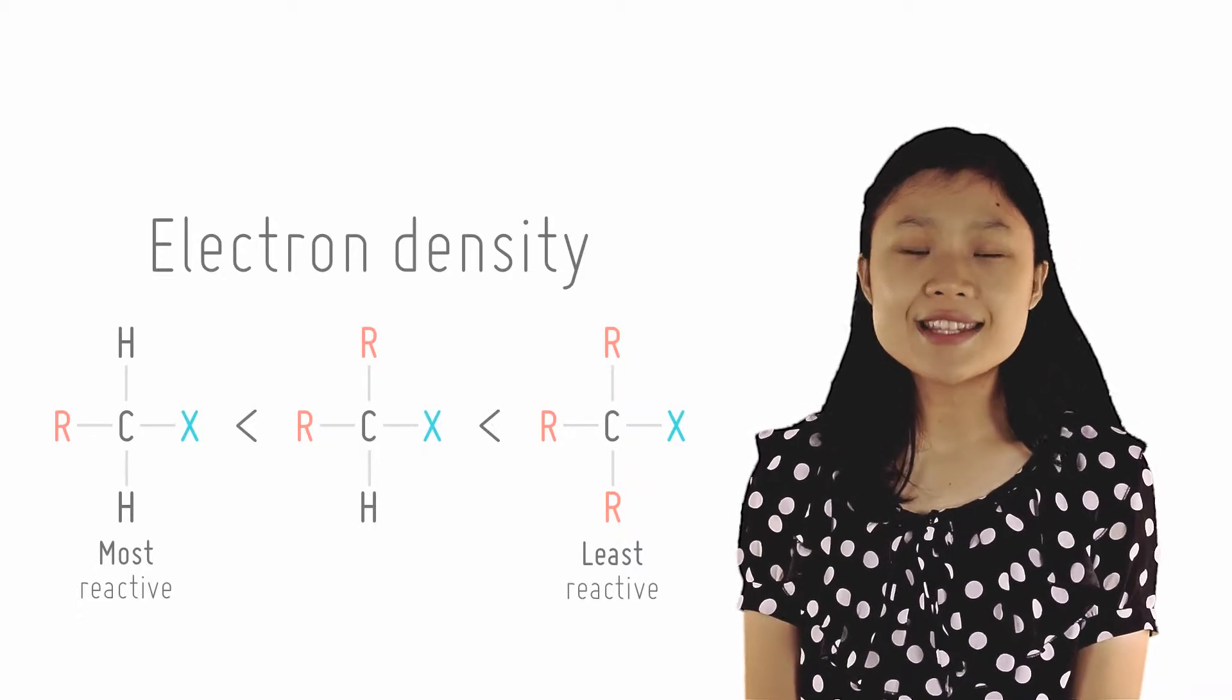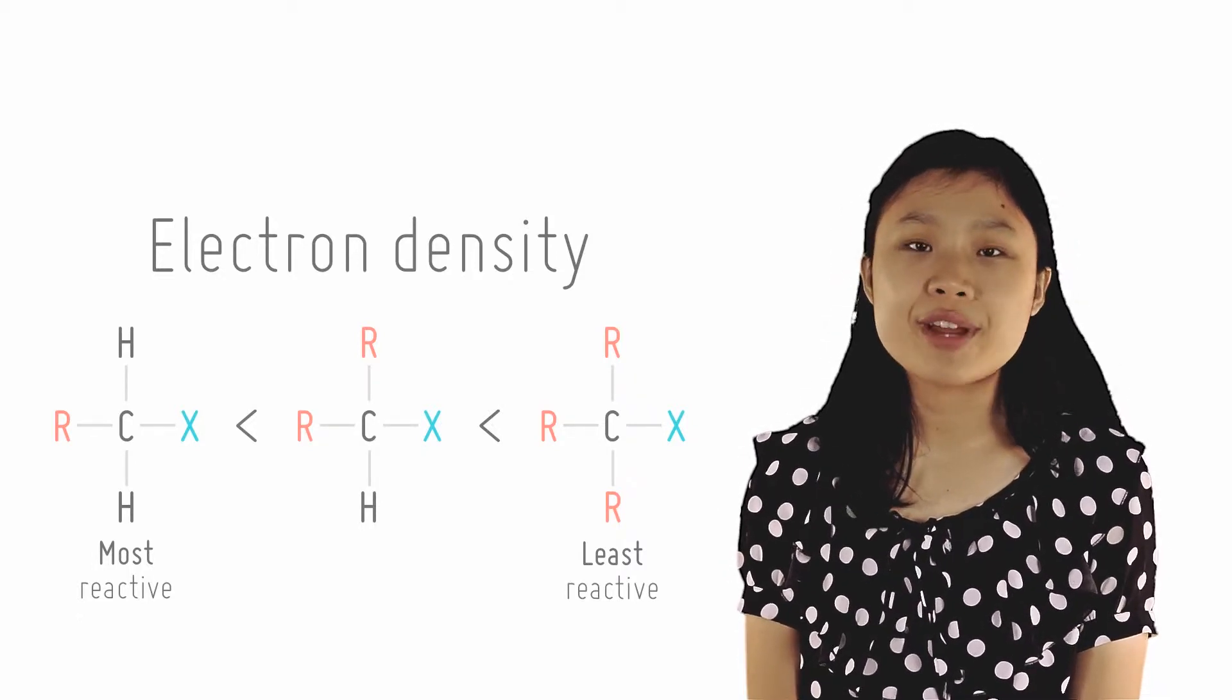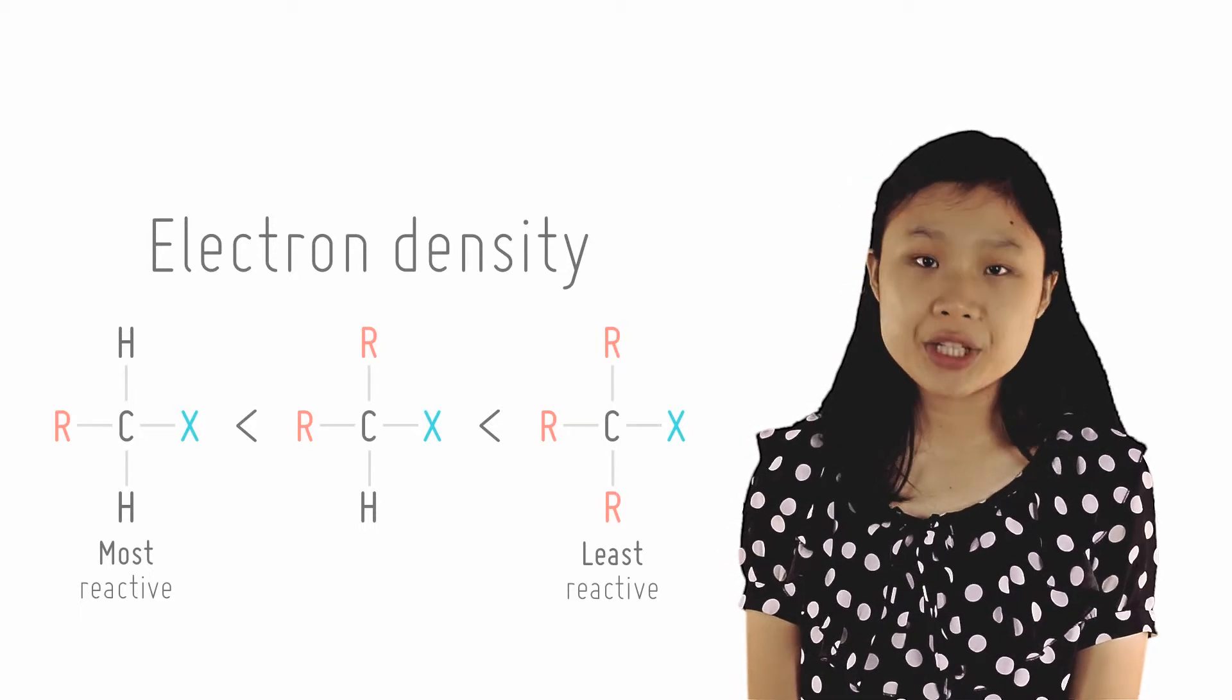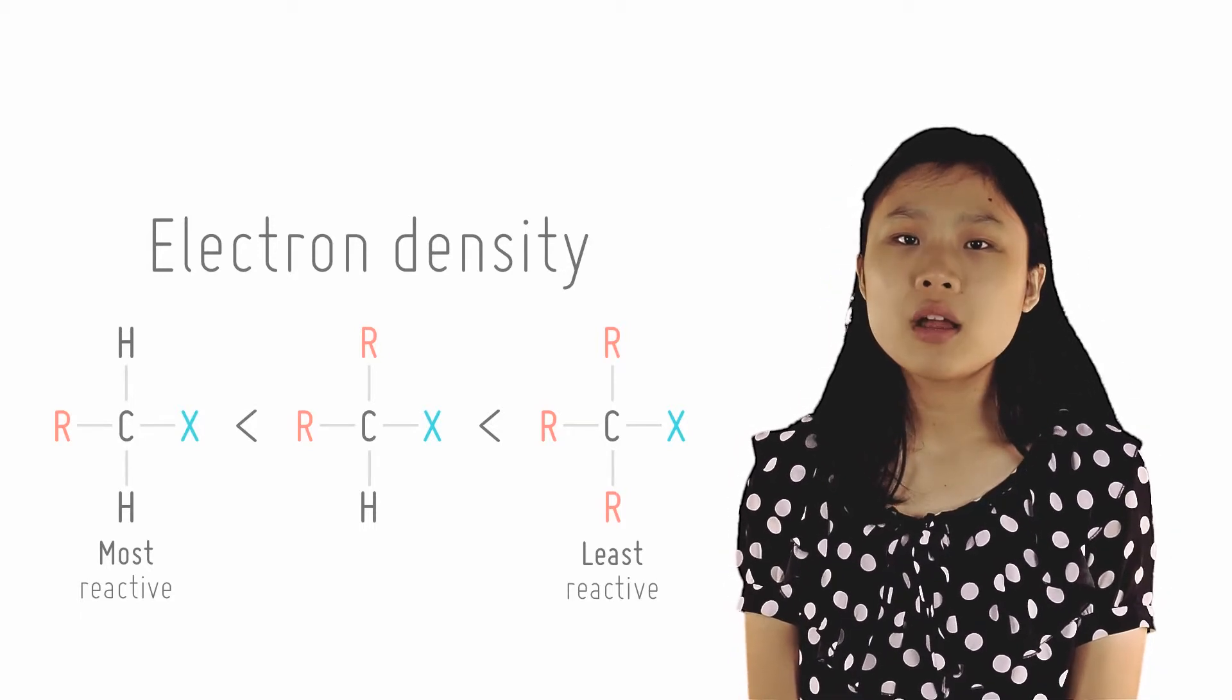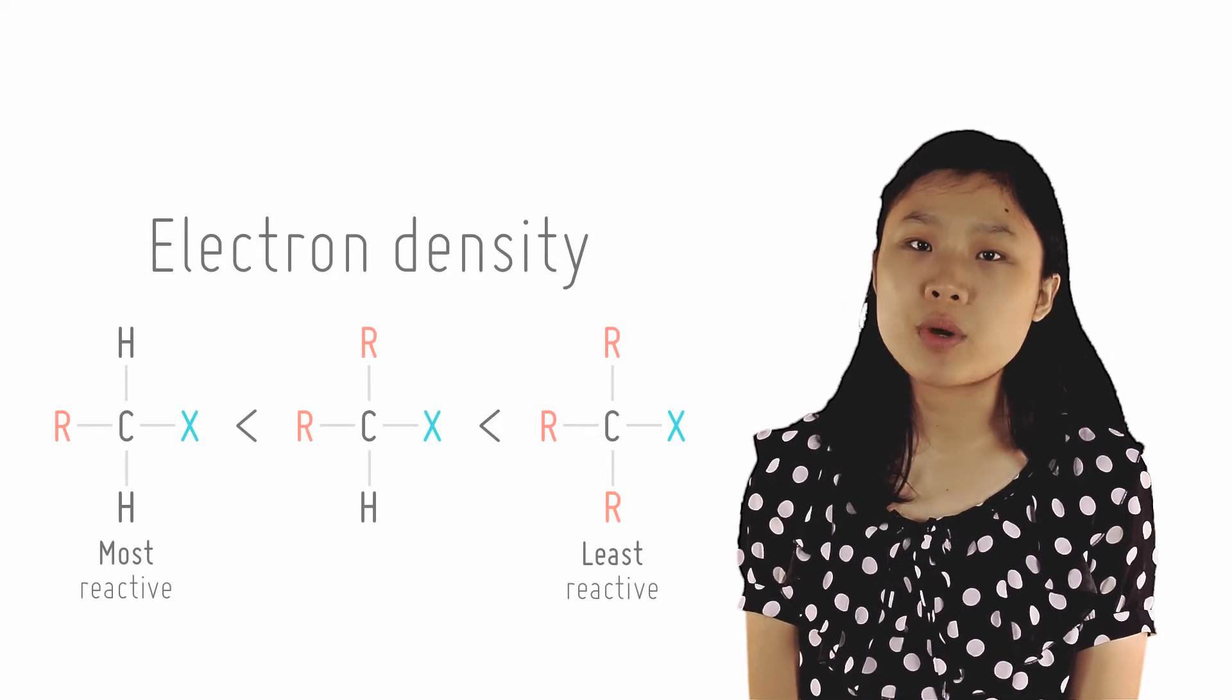So for the SN2 mechanism, primary haloalkanes react the fastest, followed by secondary, then tertiary haloalkanes. Recall that this is opposite from the SN1 mechanism.